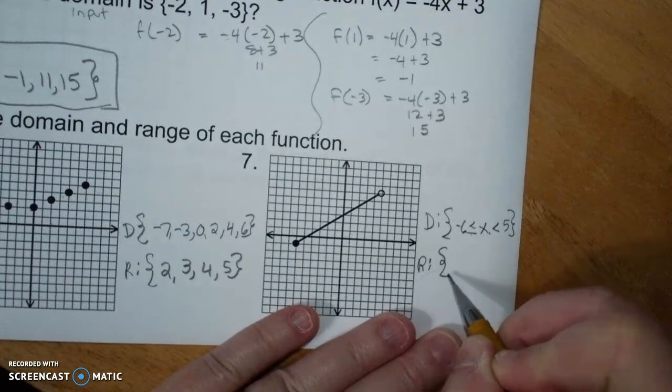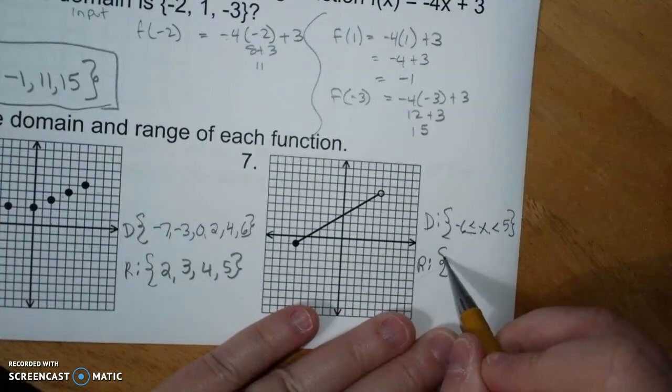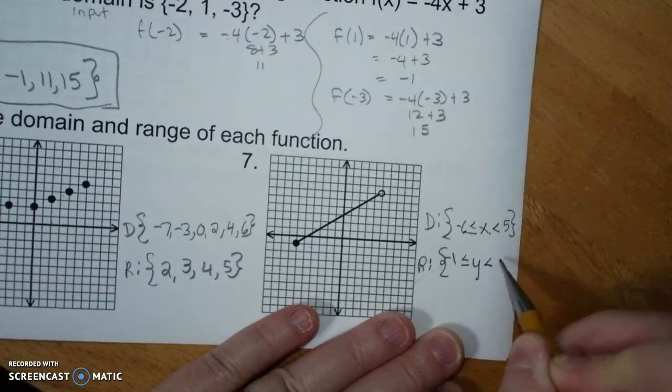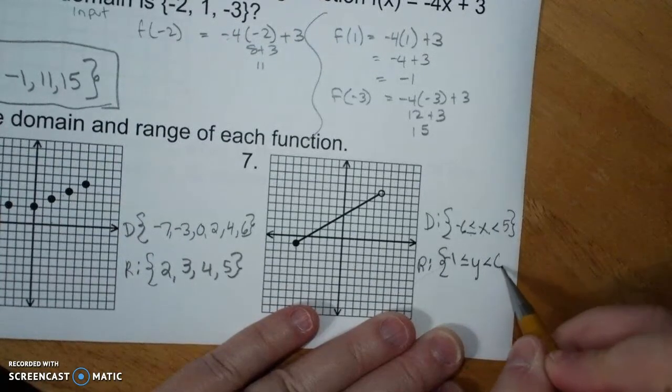Range. Bottom is negative 1, closed dot, to y, open dot, 6.